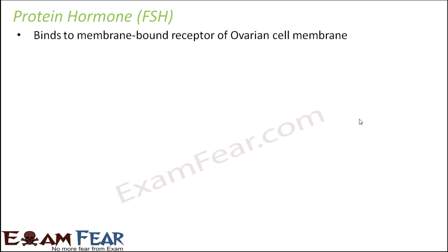We will now take examples of some hormones to see how they work. Let us take one example of a protein hormone — FSH, the follicle-stimulating hormone. Let us see how follicle-stimulating hormone works. It will first bind to the membrane-bound receptor which is present on the cell membrane of the ovary.